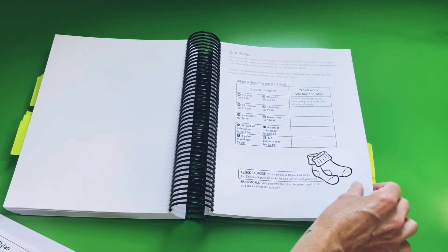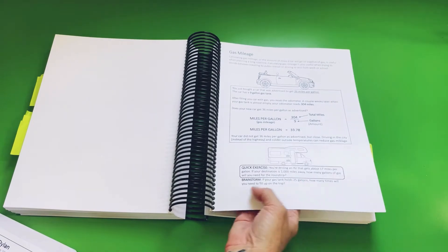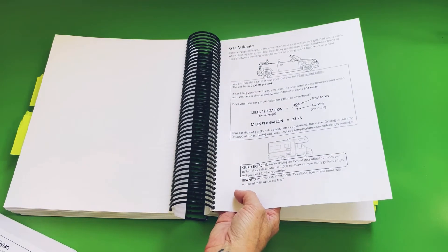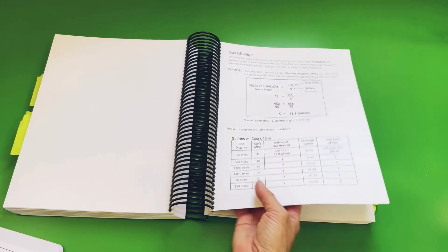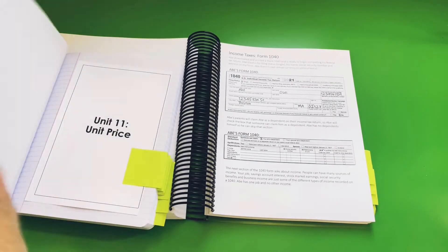And some more, another quick exercise. Gas mileage was in the unit price so that students can figure out how to calculate gas mileage. More problems to do and then we'll get into our income taxes. And let me show you that part here in the notebook.